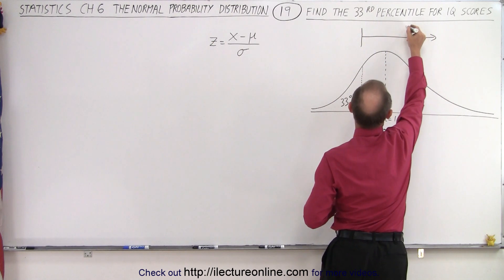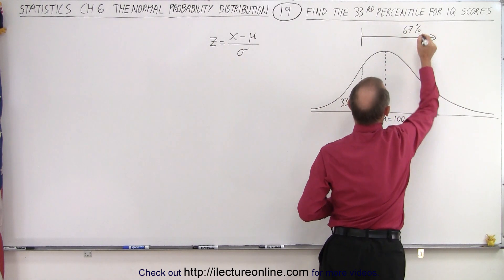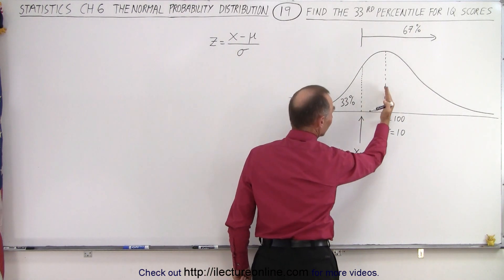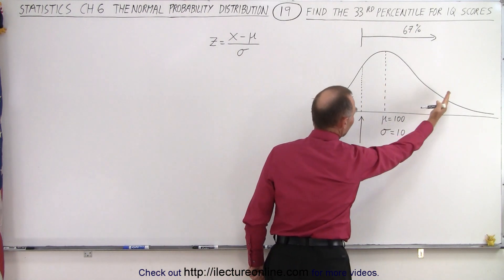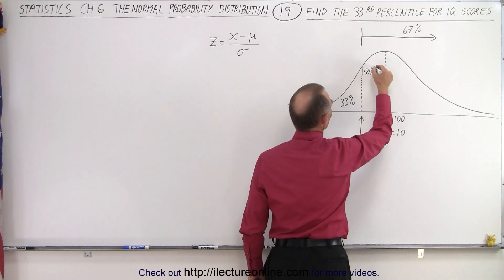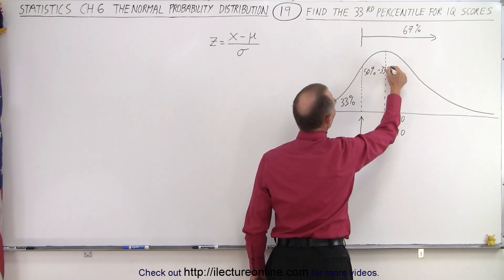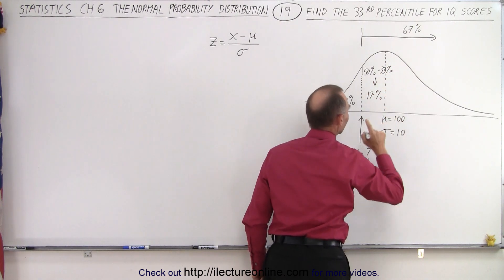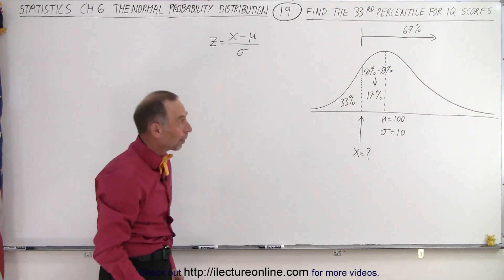This represents 67% of the area, but the real value we're interested in is this area right here. Since half is on this side, the other half is on this side, 50% minus 33% means that this area here is 17%. And that's the key to solving this problem.